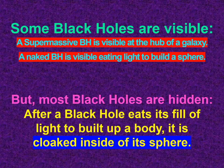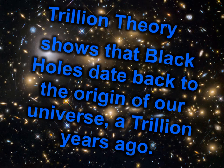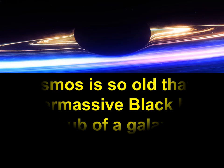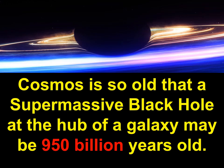Some black holes are visible, such as a supermassive black hole at the hub of a galaxy, and a naked black hole is visible eating light to build a sphere. But most black holes are hidden — after a black hole eats its fill of light to build up a body, it is cloaked inside of its sphere.